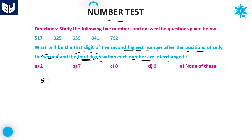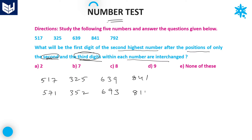After interchanging: 517 becomes 571, 325 becomes 352, 639 becomes 693, 841 becomes 814, and 792 becomes 729. These are the new numbers formed after interchanging the second and third digits.